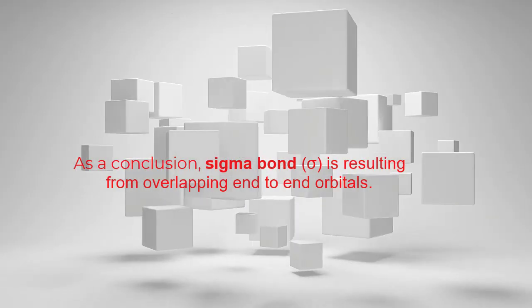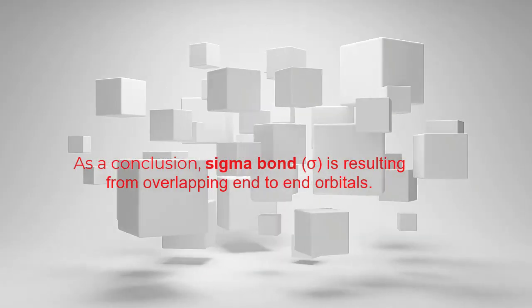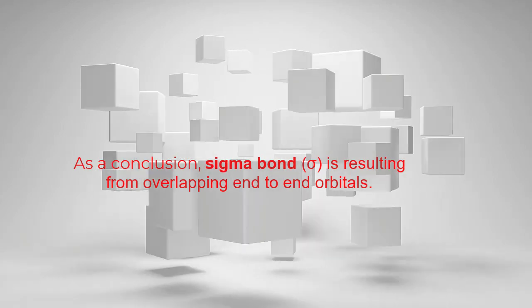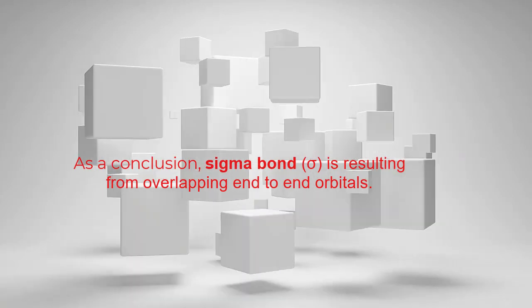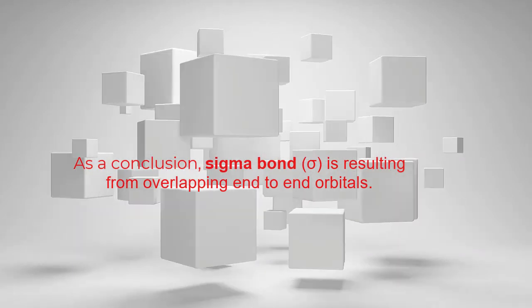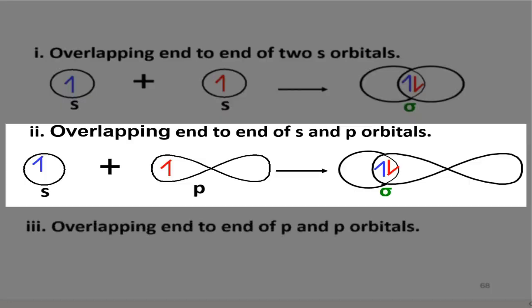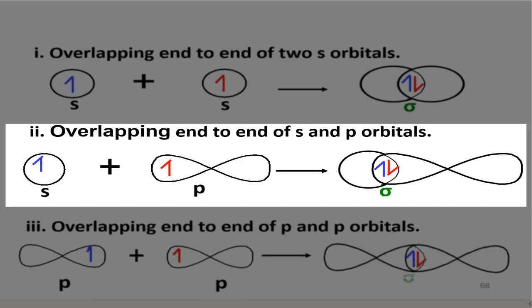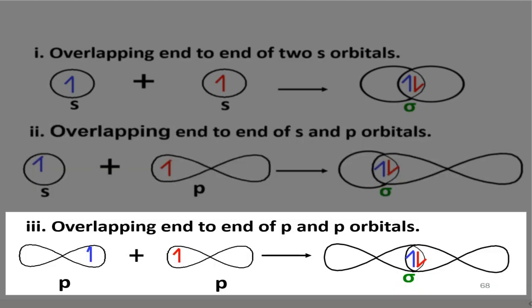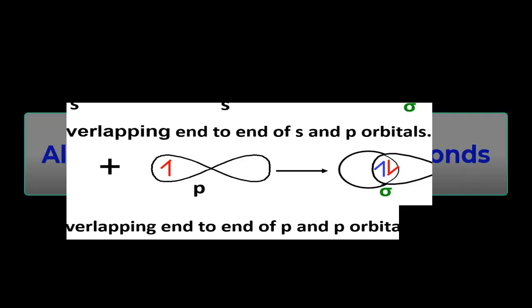In conclusion, a sigma bond results from end-to-end orbital overlapping, whether between two s orbitals, one s orbital with one p orbital, or two p orbitals. All single bonds are sigma bonds.